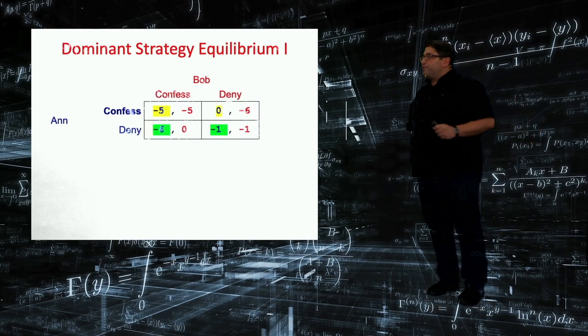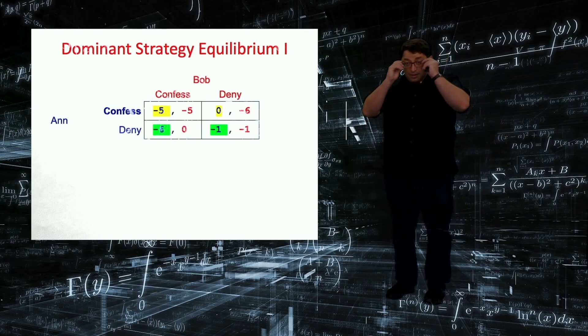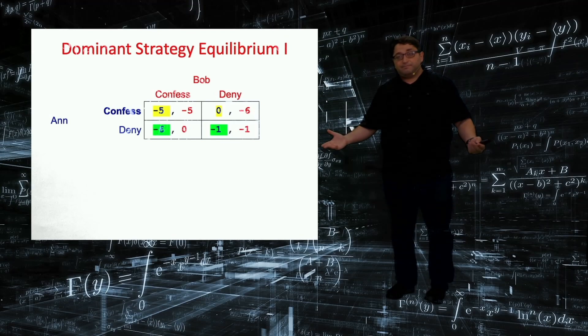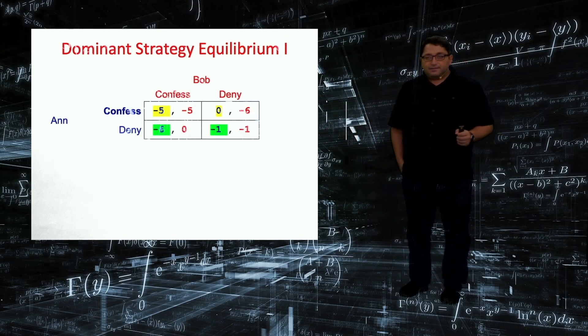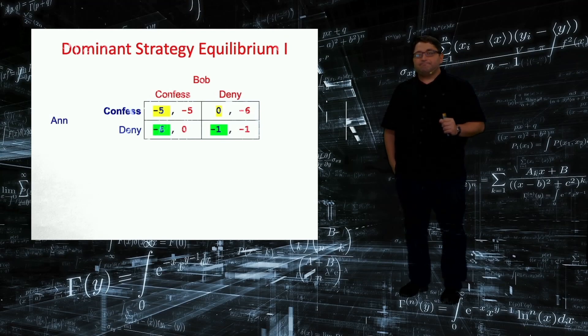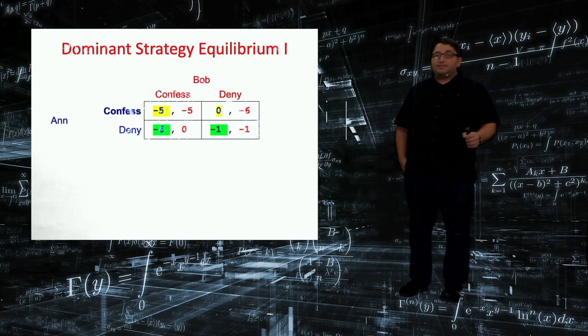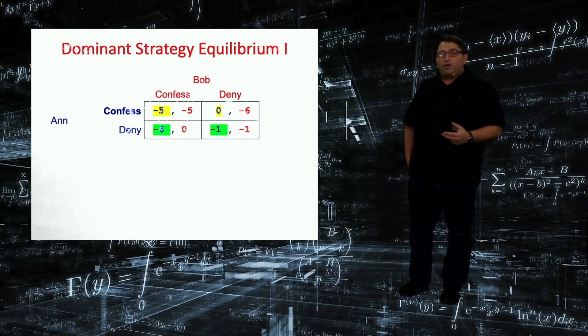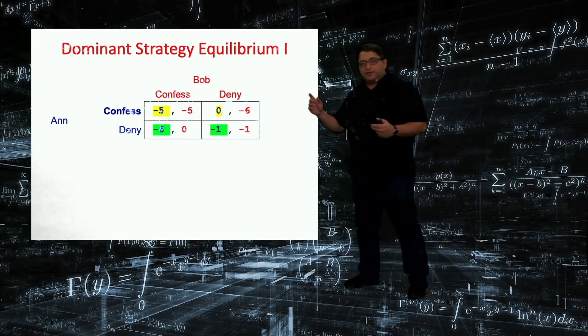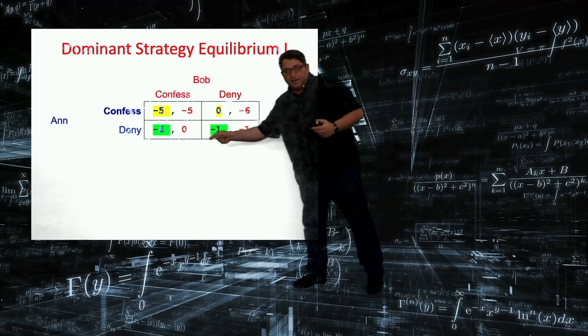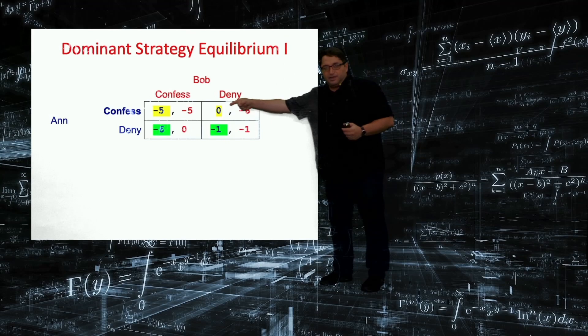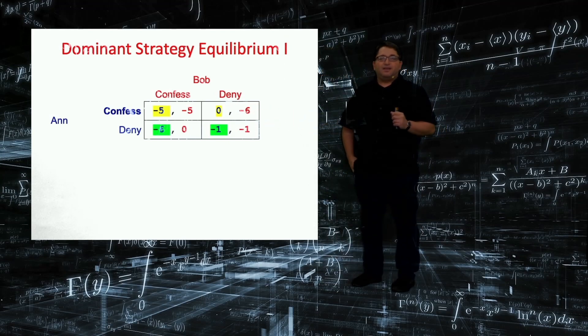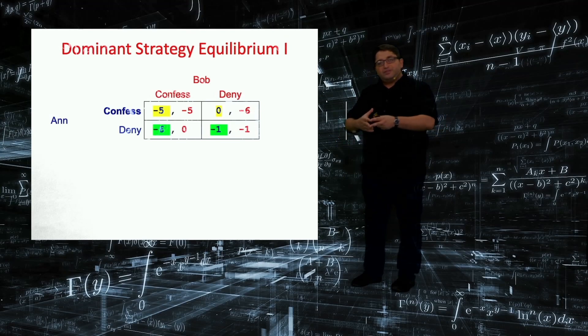So let's look at our prisoner's dilemma game and see whether either of the player has a dominant strategy. So let's start with Ann. Does Ann have a dominant strategy? The answer is yes. Confess is dominant. Because if Ann confesses, regardless of what Bob does, her payoff is always better. Just look at the matrix. Minus 5, minus 5 is better than minus 6, right? And 0 is better than minus 1. Regardless of what Bob does, Ann choosing confess will get a strictly higher payoff.